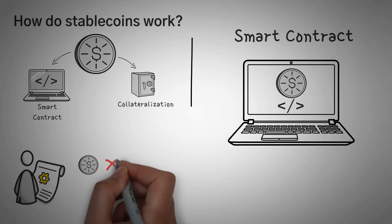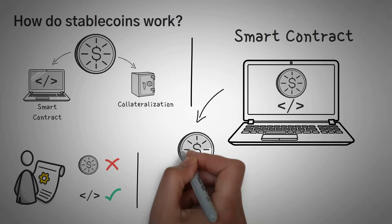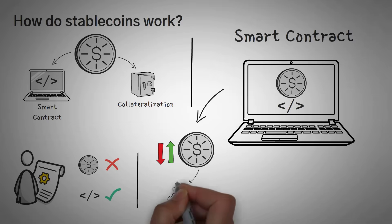However, some of the problems can seem much worse. Smart contract controlled stablecoins are usually much more volatile, simply due to how they work. What they do is they must manipulate the supply of their coins to adjust the price.